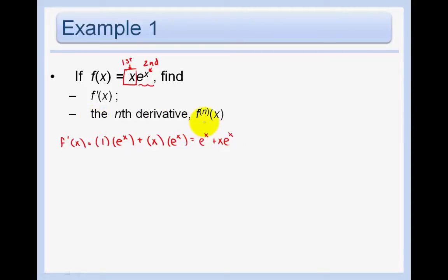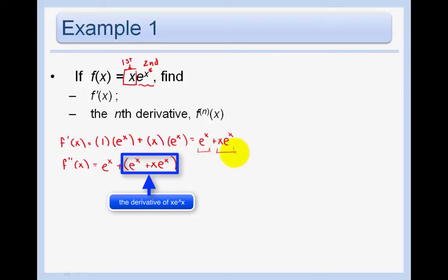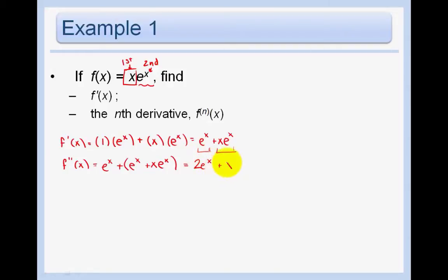The second part says to find the nth derivative. In order to do that, I'm going to need to see a pattern, so I'm going to need to take the derivative once more. So now let's take the derivative of e to the x plus x e to the x. This is a sum of two functions. The derivative of e to the x is just e to the x. However, the derivative of x e to the x requires a product rule — we already found that was e to the x plus x e to the x. So we get two e to the x plus x e to the x.